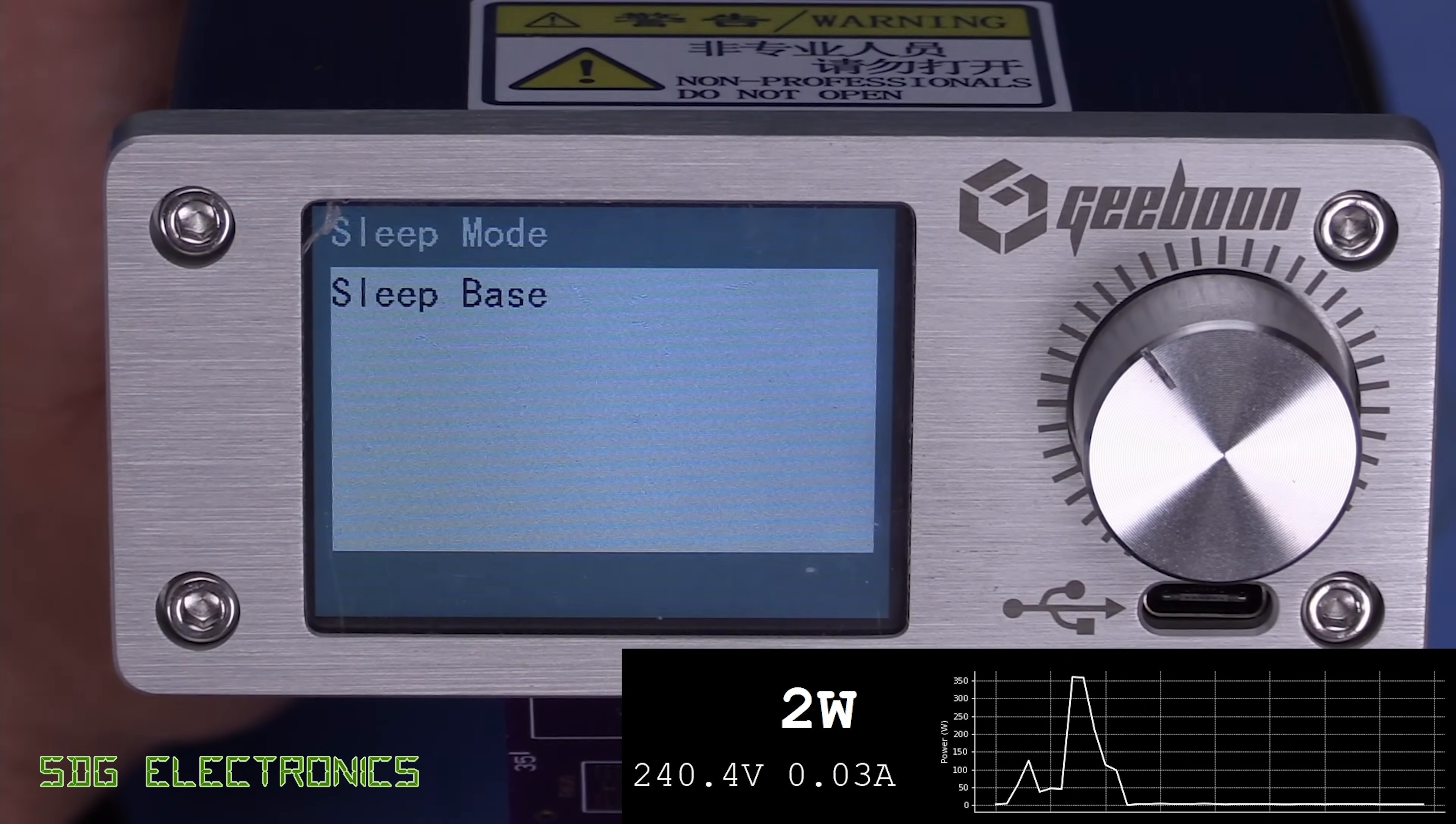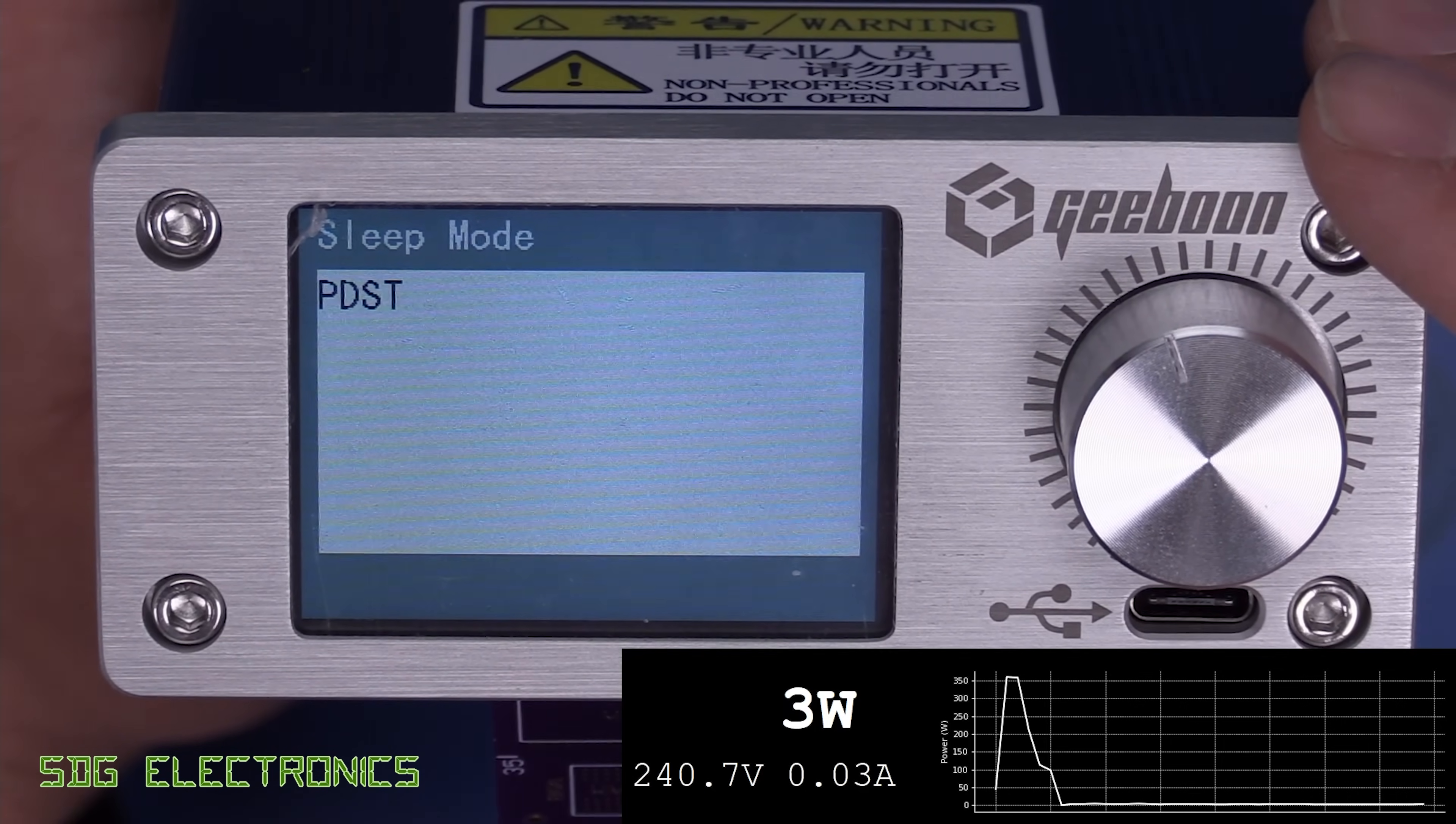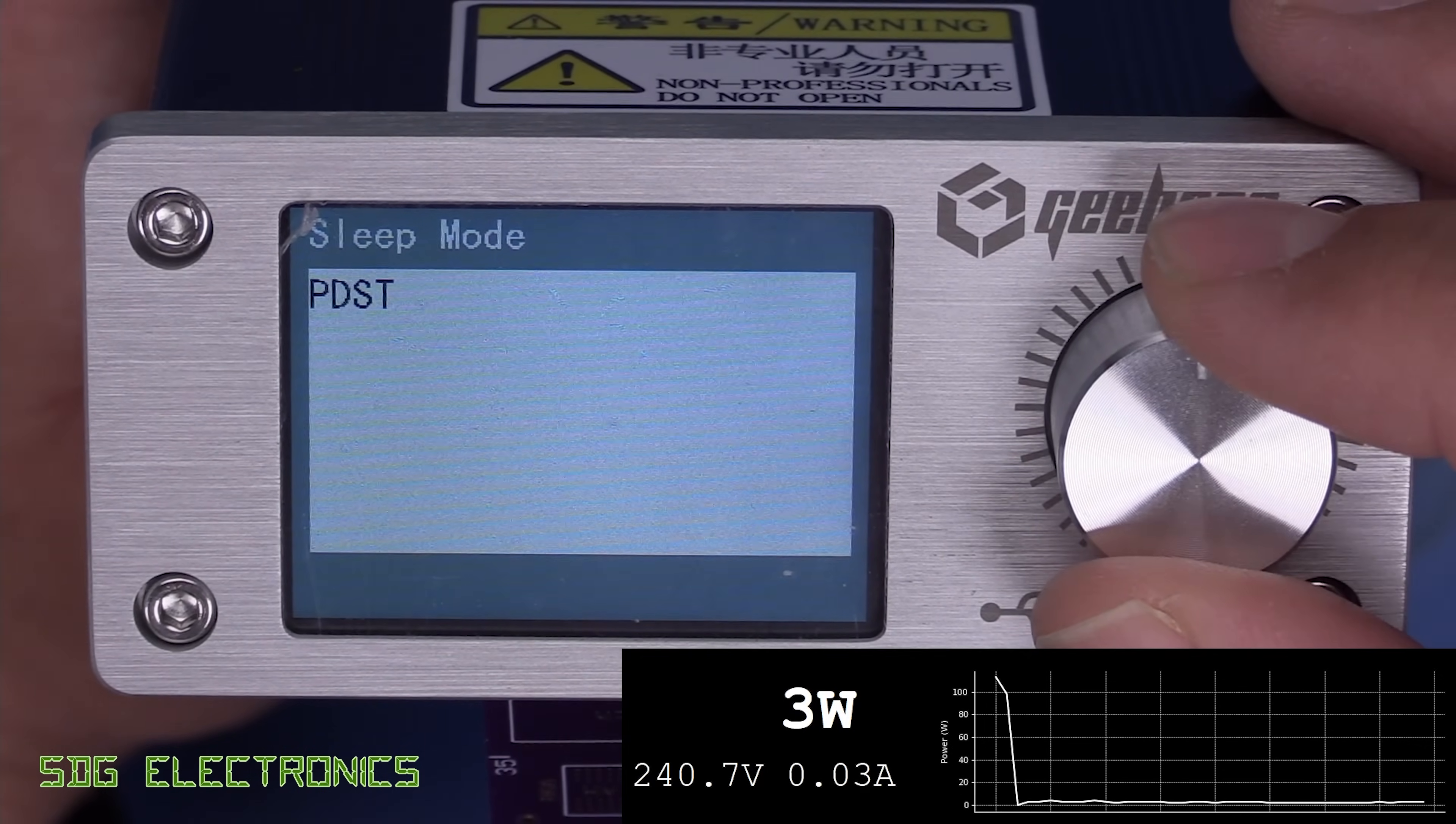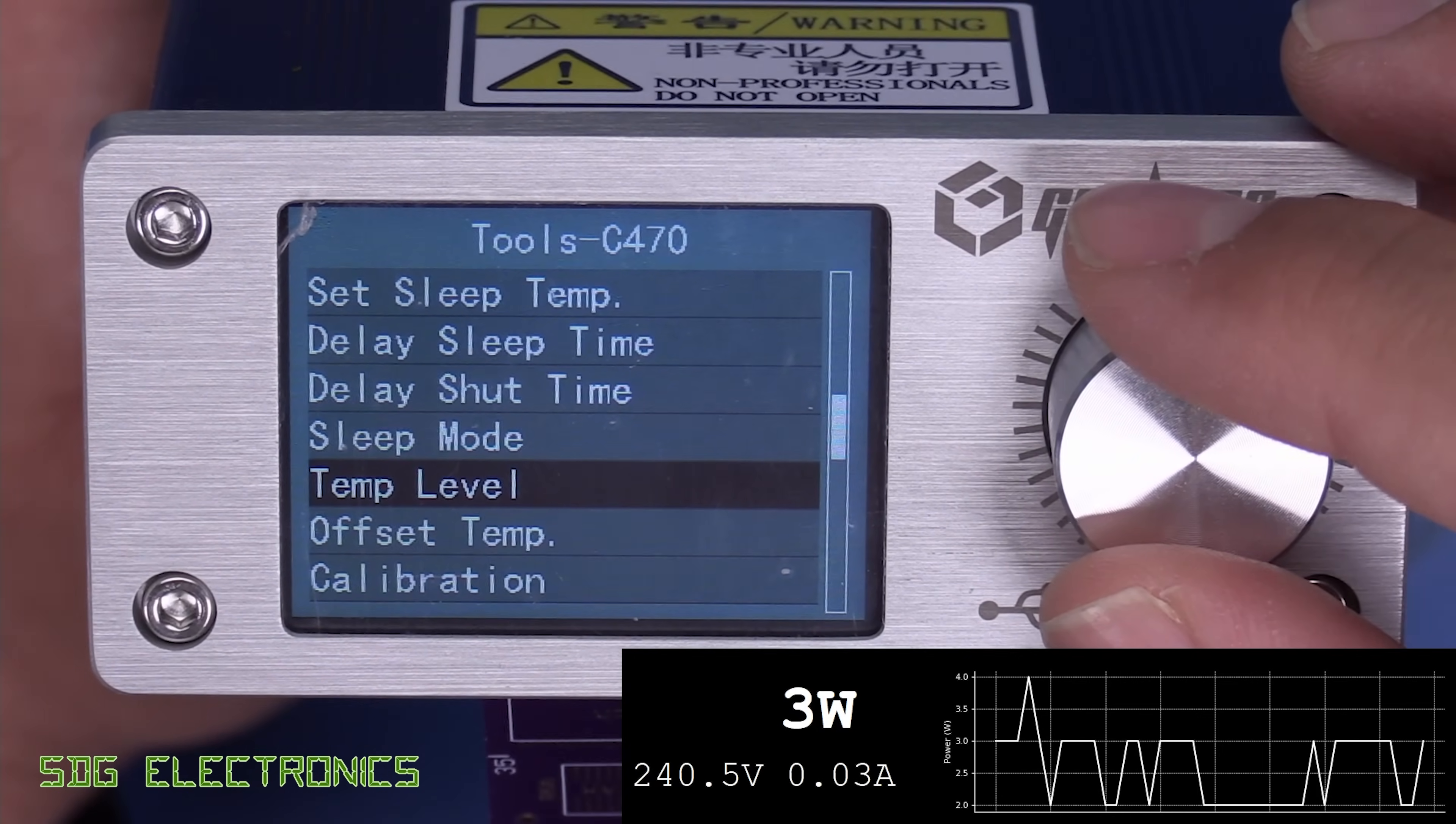And there's three options here. So sleep base, this is when the handpiece is in the base, it knows to put it into sleep mode. But we can also change it to PDST, which is where it checks the amount of power being delivered. And if it doesn't see any spikes above a certain level, that assumes that you're not soldering anymore and it can put it to sleep. And if you have one that's enabled, this handpiece doesn't have it, you can also use a handpiece that has a vibration detector, which can be used to put it into sleep.